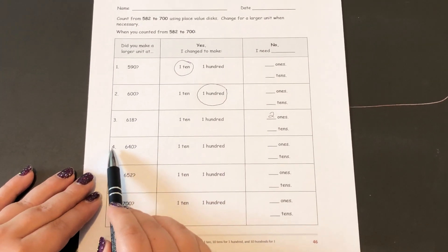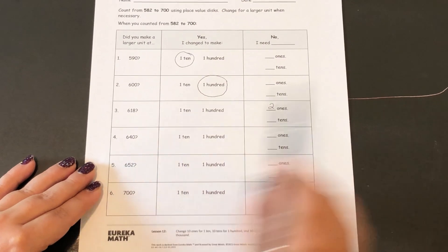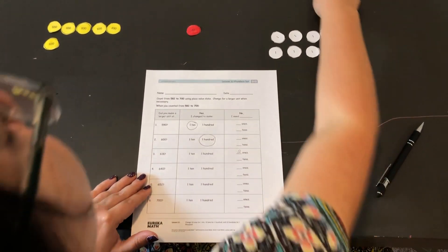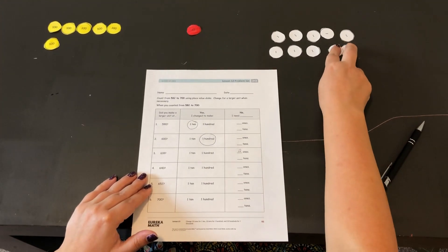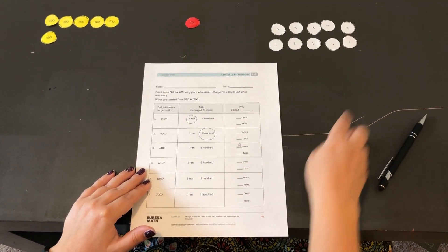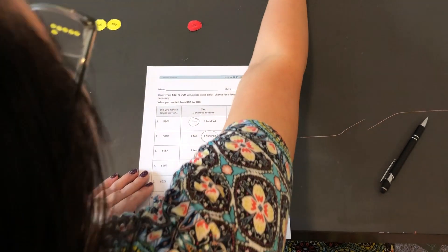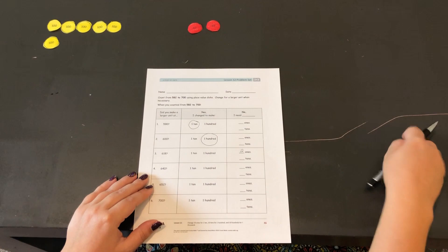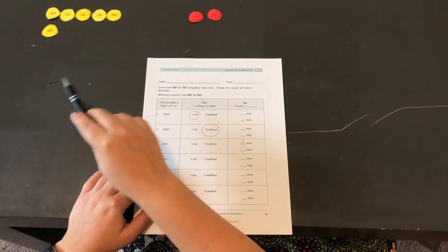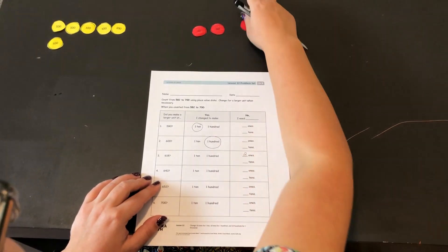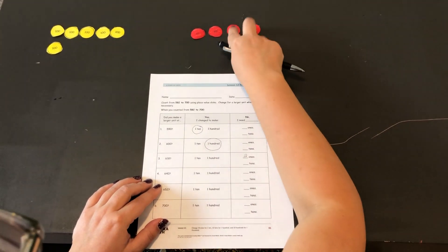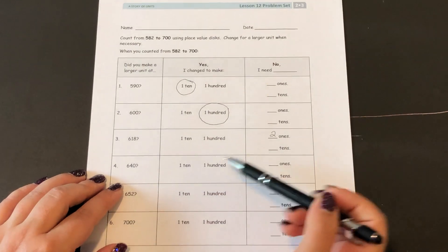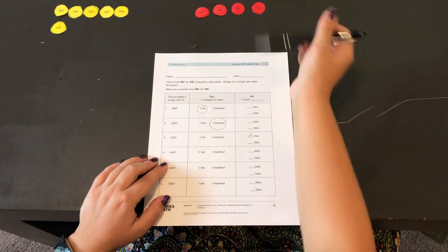The next one is getting to 640. So if I'm at 618, first I want to add two ones. Now I have ten ones to make another ten. And I'm at 620, 630, 640. Did you make a larger unit? Yes, because we traded in our ten ones to make a ten.